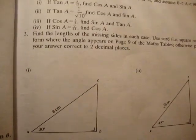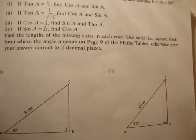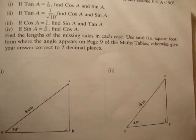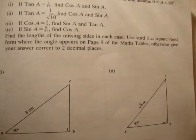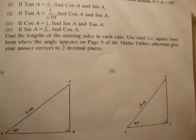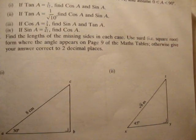So the next one I'm going to do is question 3. Find the lengths of the missing sides in each case. Use third or square root form where the angle appears on page 9. Where the angle appears on page 9 on the math tables, otherwise give your angles correct to two decimal places.